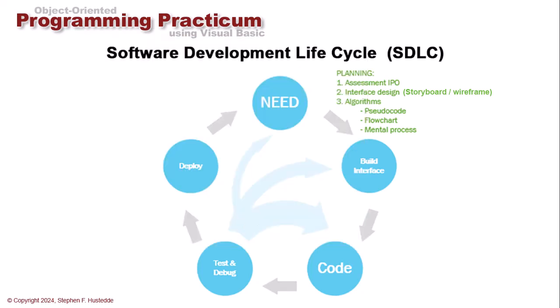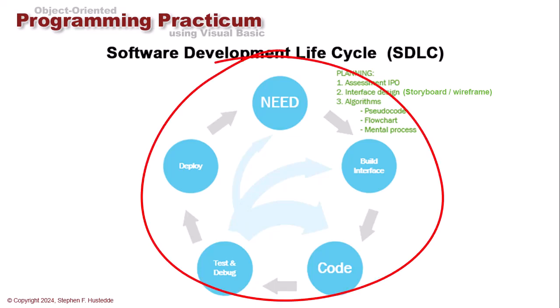Finally, once we get this working, we are ready to deploy — to distribute the application, whether to a single user, putting it in the Windows Store for the world, or just on our own computer. Now I have an arrow going from deploy back to need, because this is a cyclical process. Chances are you'll see opportunities to make it better or add new features. We come back, modify the need, modify the interface and the code — and that's why there are new versions of software that come out. That is the software development lifecycle.